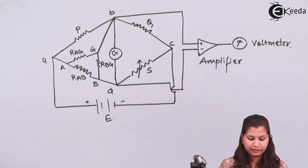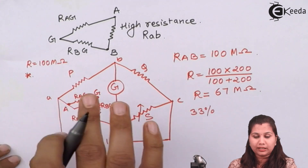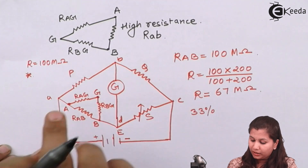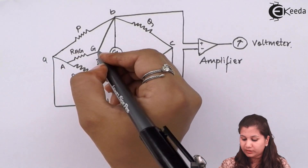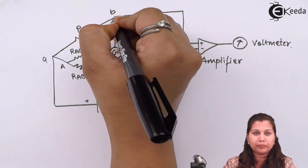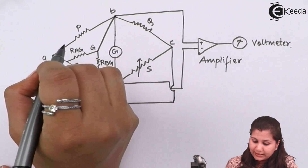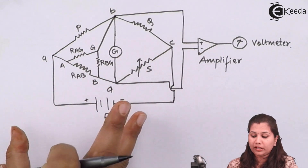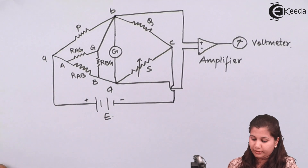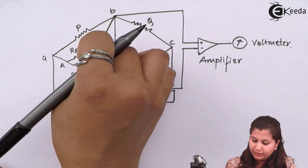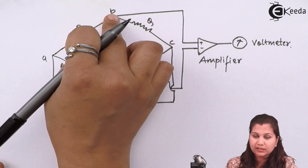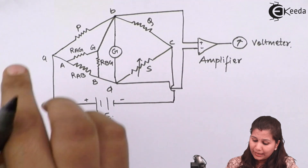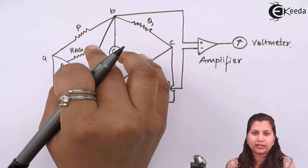In the first case, the galvanometer checks the null condition and the guard terminal is left unconnected. The modification is that the guard terminal G is now connected to point B. In this case the measured resistance value comes out to be much more accurate compared to the earlier circuit. The guard terminal is connected to the meeting point of the P and Q resistances, and the galvanometer again measures the null deflection condition.